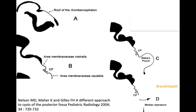This is a brief recap of the development of the posterior fossa as discussed in more detail two vlogs ago. The roof of the rhombencephalon gets divided by the primitive choroid plexus into an anterior membranous area and a posterior membranous area. The anterior membranous area gets covered by the developing cerebellum. The primitive choroid plexus produces CSF, causing outpouching of the posterior membranous area named Blake's pouch, and at some point this pouch perforates to form the median aperture.